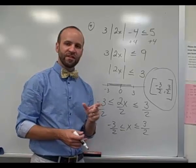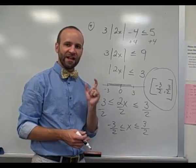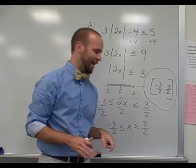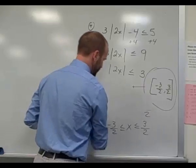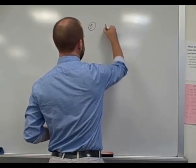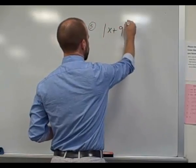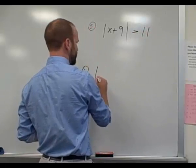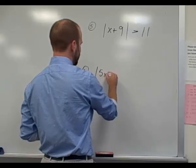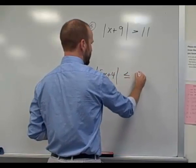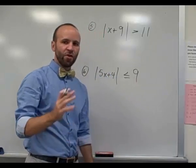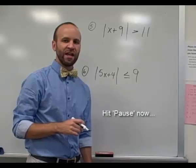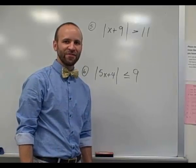Now I'm going to give you two examples to try on your own. Hit pause and try them. The first is the absolute value of x plus 9 is greater than 11. The second is the absolute value of 5x plus 4 less than or equal to 9. Go ahead and hit pause, work these out, and when you think you've got the answer hit play and I will reveal the correct answers.